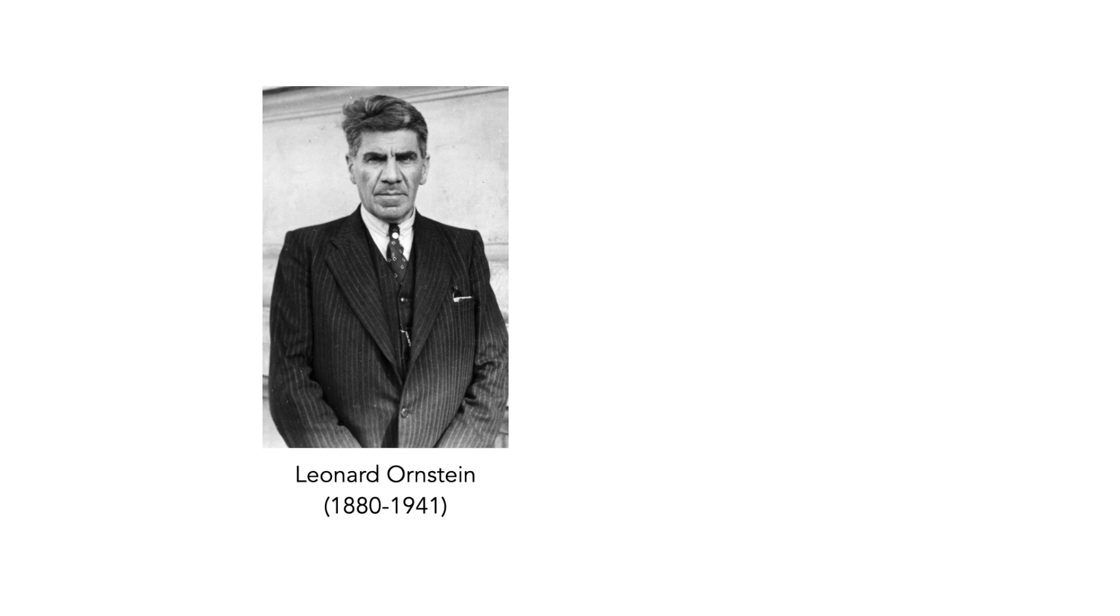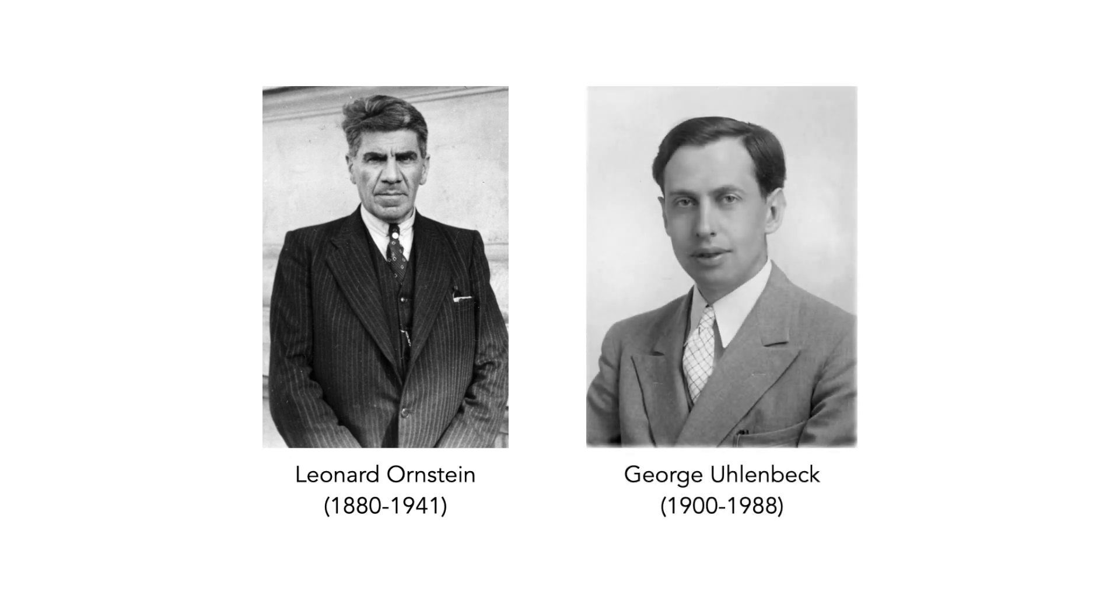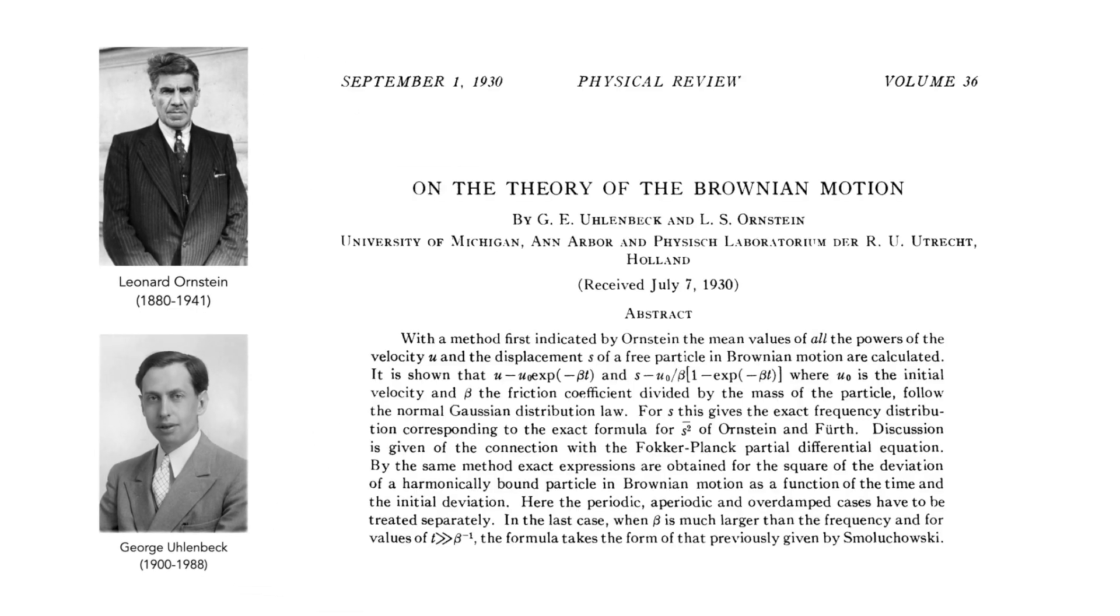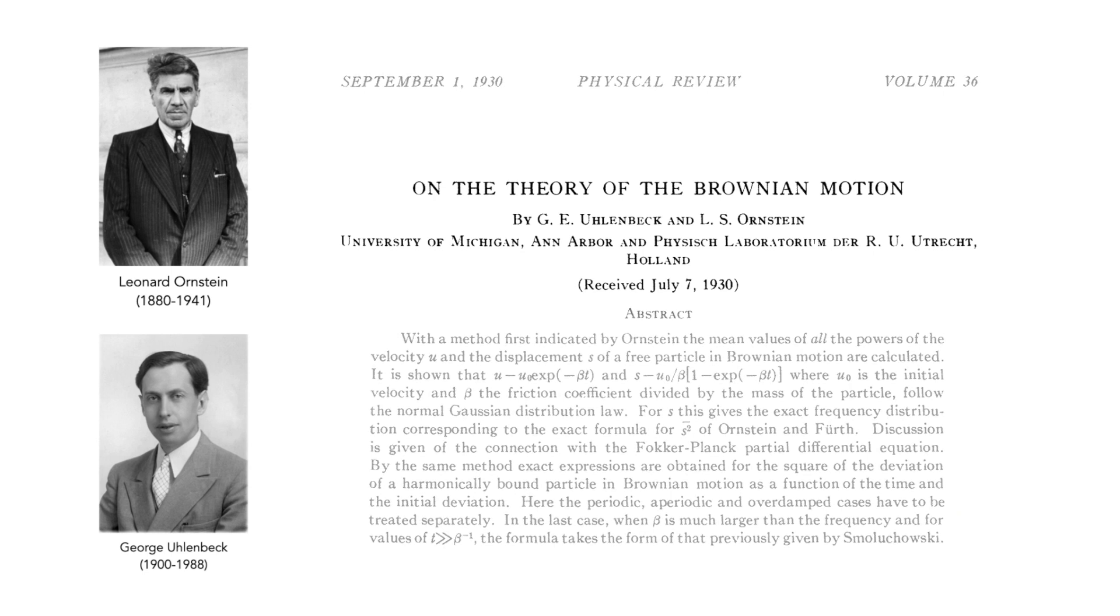The Ornstein-Uhlenbeck process is named after the physicists Leonard Ornstein and George Uhlenbeck. Together in the early 1900s they worked on developing a rigorous mathematical theory of Brownian motion, building on earlier results of Smoluchowski, Einstein, Langevin and others.